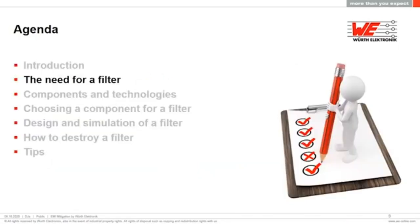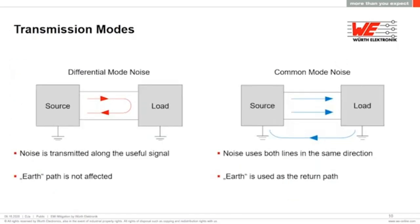Now let's move to the next section: the need for a filter. There are two types of noise in transmission modes: differential mode noise and common mode noise. The differential mode noise flows from one phase or one line to the other line; in this case, the earth path is not affected. For common mode noise, the noise flows in both lines in the same direction and the return path is to earth. That makes a big difference between the two modes.